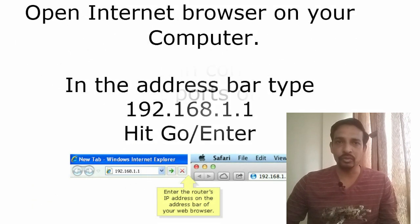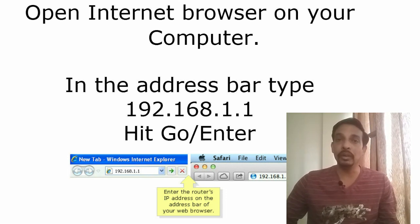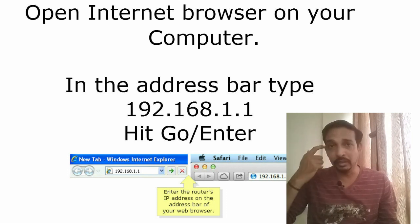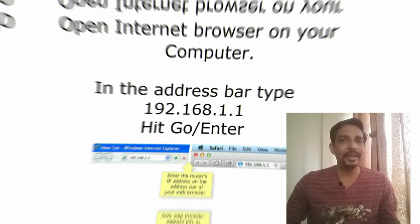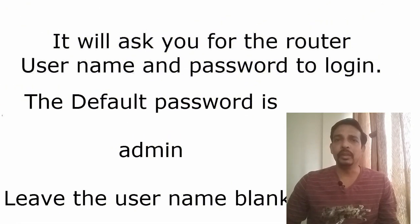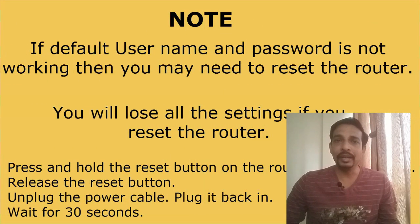On your main computer, which is connected to the router, open an internet browser — it could be Safari, Mozilla Firefox, or Internet Explorer. In the address bar, type 192.168.1.1. This is the default IP address of this Linksys router. It will ask you for a username and password. Leave the username blank and in the password field type 'admin'. This is the default password of this Linksys router.